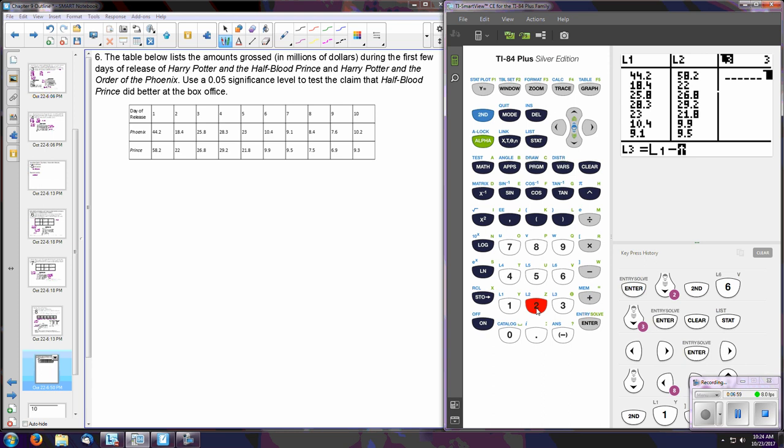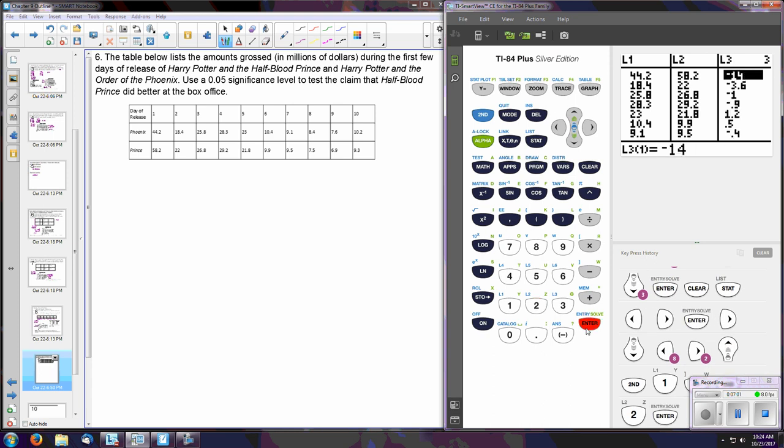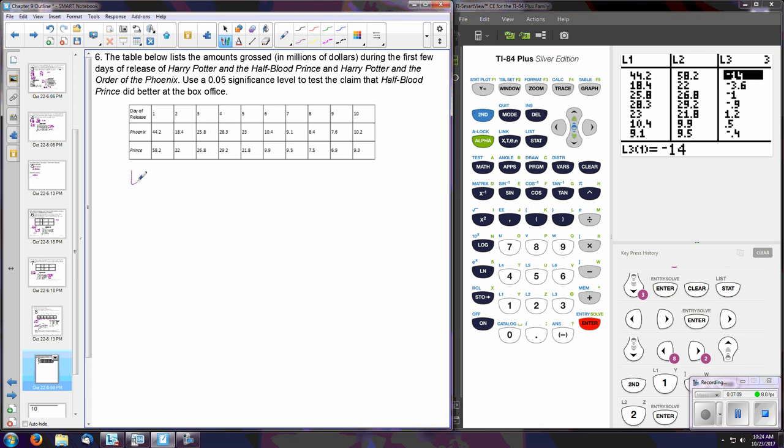Now remember, when we're measuring pooled information, we first need to find the differences. So we're going to take list one and subtract list two and populate there. So that means the list of our differences is holding all of that in three—L3 has all the differences. And then you could copy this down if you wanted, but it's really not necessary.